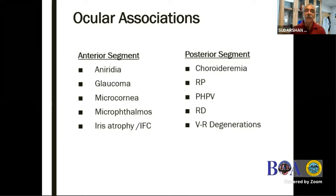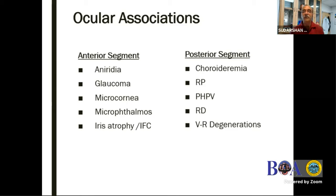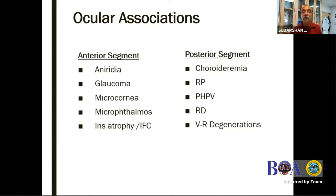Ocular associations could be many. If you find a unilateral cataract, always look in the eye for the problem - the eye will tell you what the problem is. Bilateral cataract - you have to look at the systemic problems. Systemic conditions will cause bilateral cataract by and large, maybe 99%. Ocular associations will be seen only in unilateral - but yes, sometimes you can get bilateral as well.